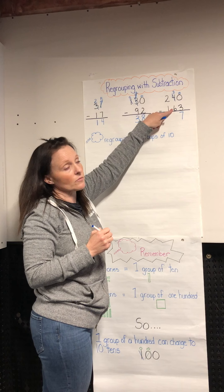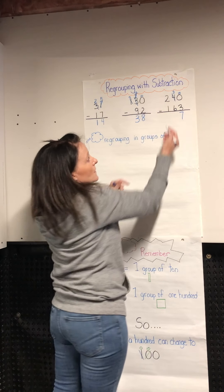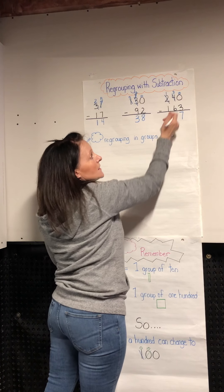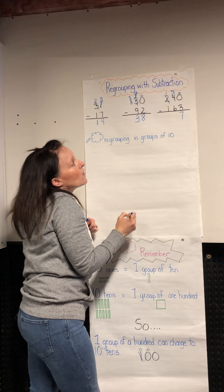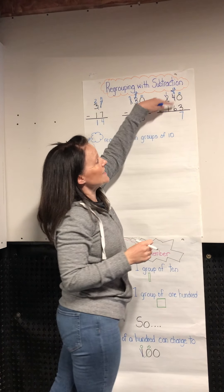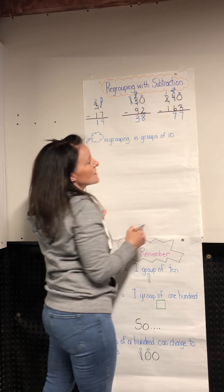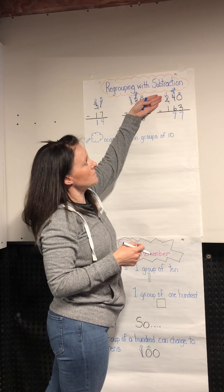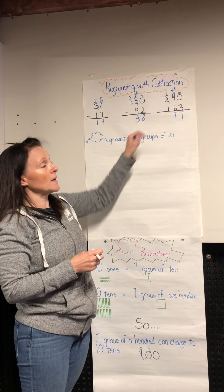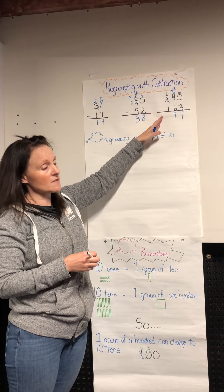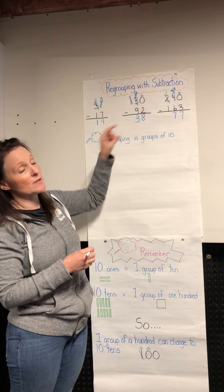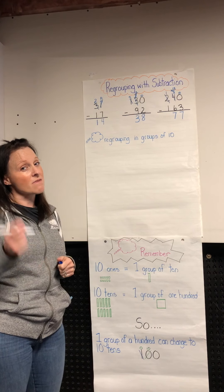Now in our tens column it says three take away six — we can't do that, three is smaller than six. So we're going to regroup again. Let's borrow a hundred; there's one left, and it turns into ten tens. I bring over ten tens plus the three already there, so now I have thirteen. Thirteen take away six is seven. Then in my hundreds column: one take away one is zero, so we don't need to write it. The double regrouping follows the same idea — grouping in tens, just using two columns this time.